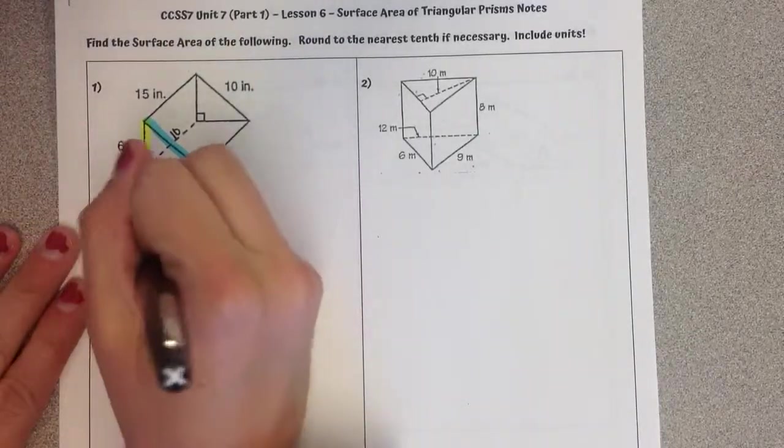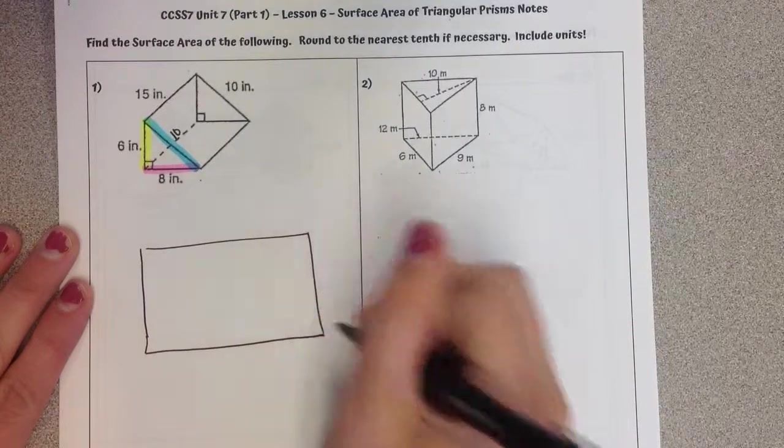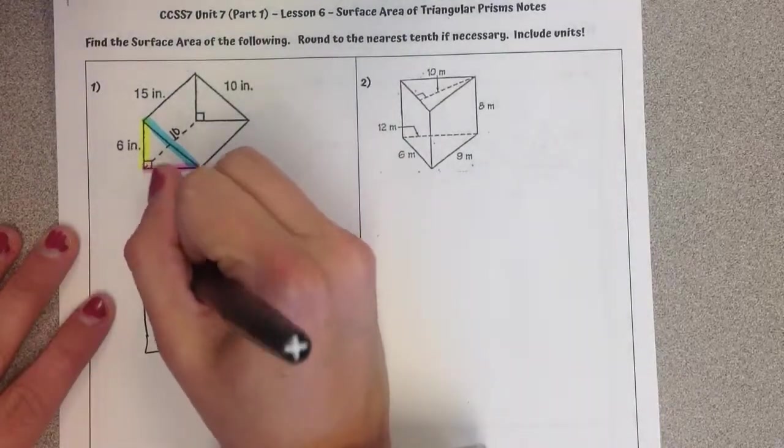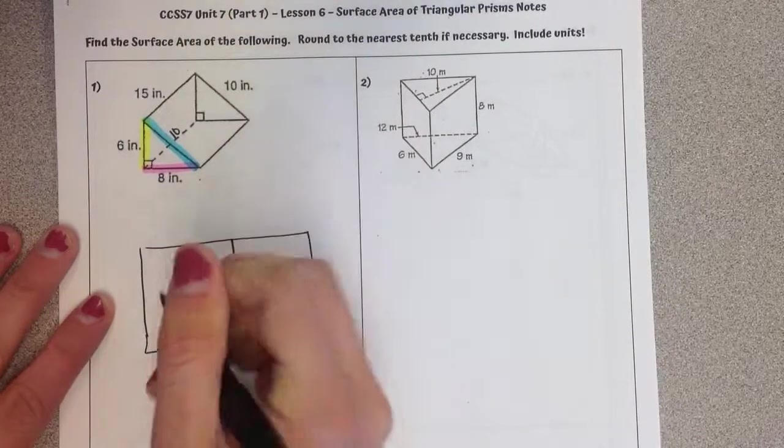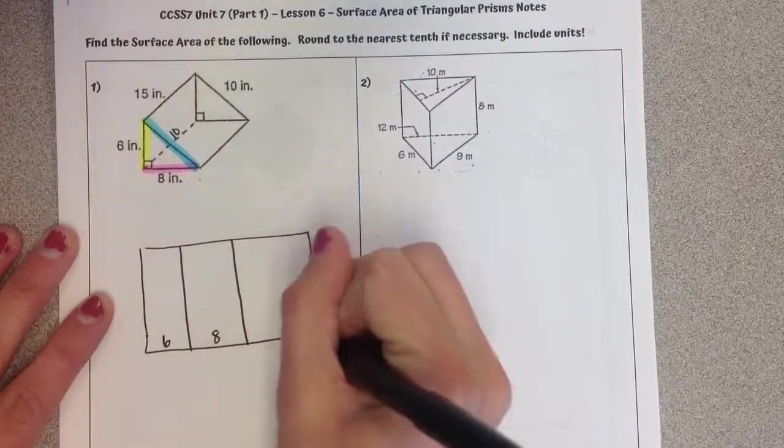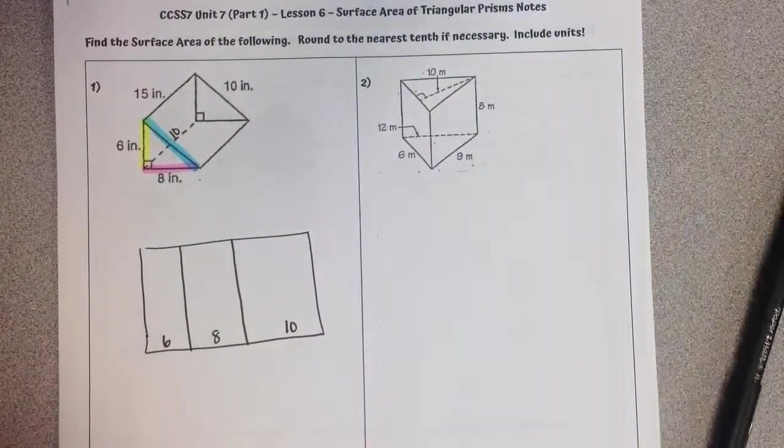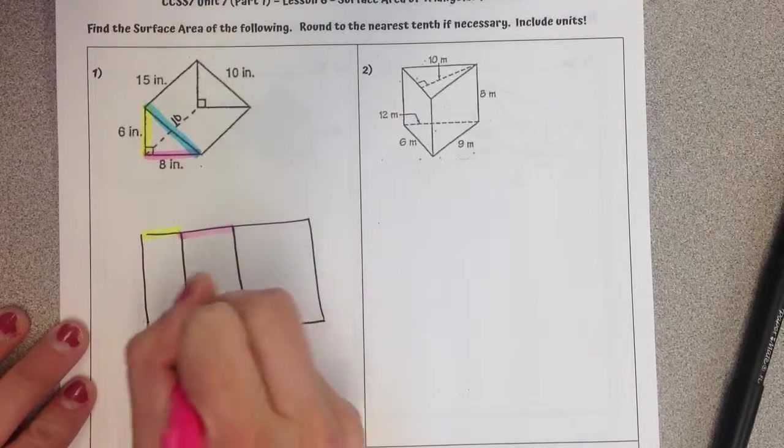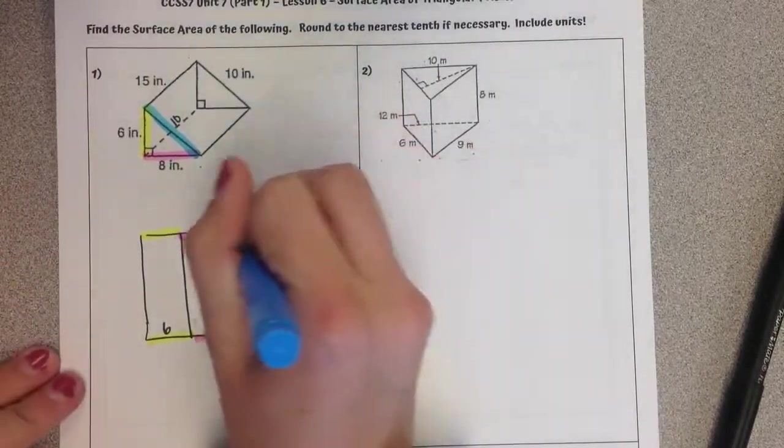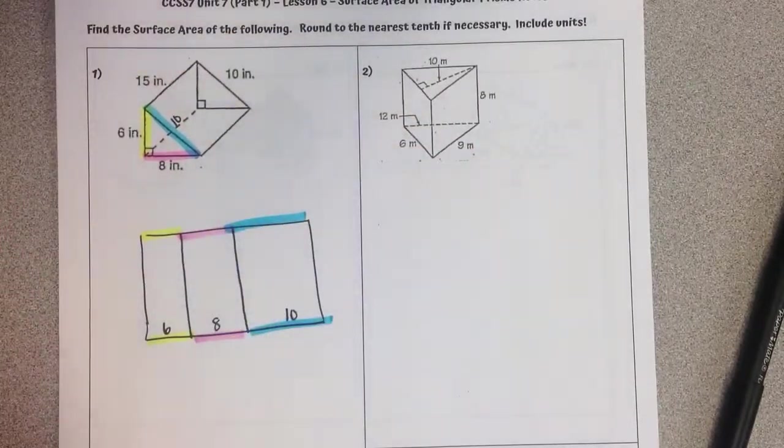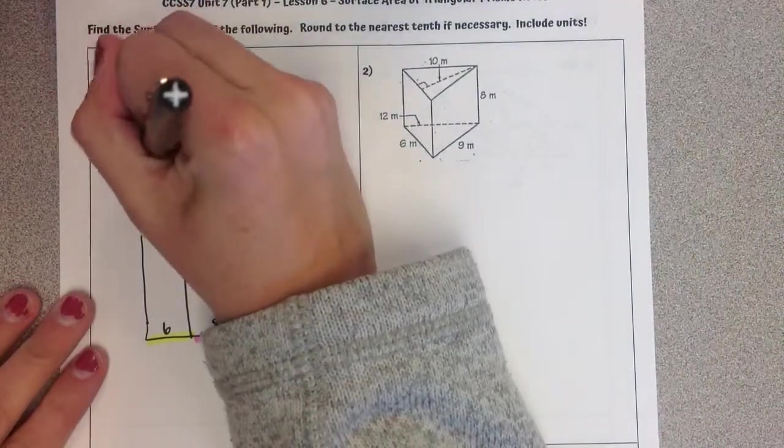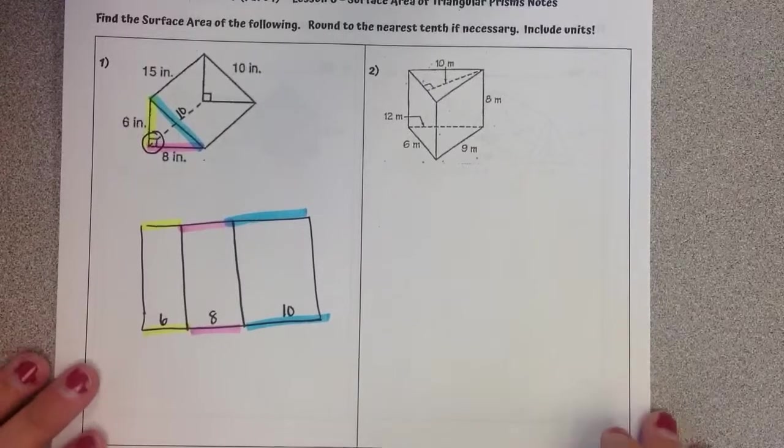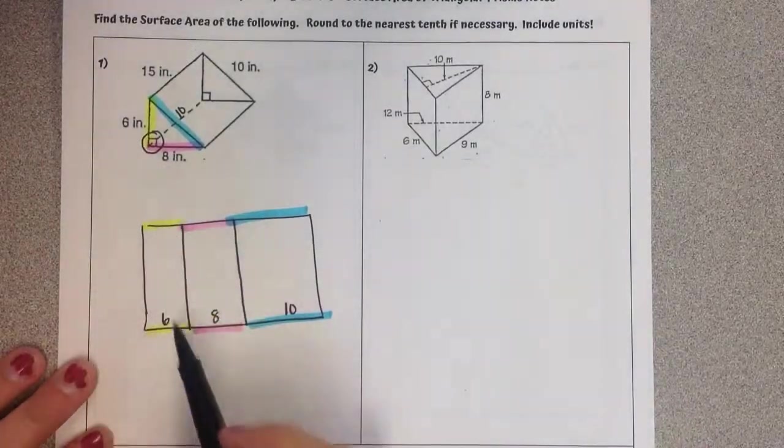In a triangular prism, we have three lateral faces, and the base lengths of those are going to be the three side lengths. So our 6 by 8 by 10. Then we're looking for that 90 degree measure to show us where our perpendicular height is so that we can connect our bases.